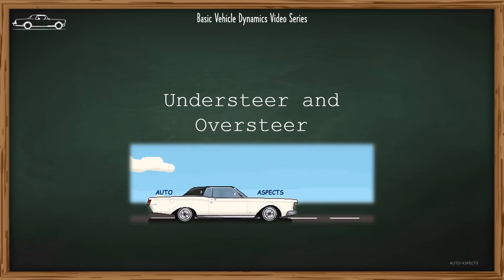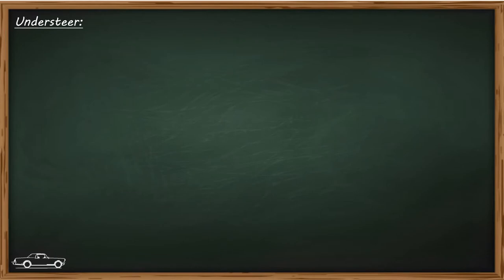When does a vehicle exhibit understeer behavior? Understeer is a condition resulted due to the lack of responsiveness of a car's front end, particularly when it turns in a corner.